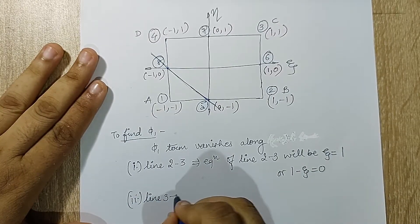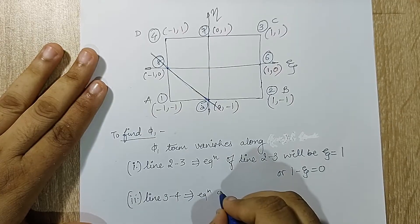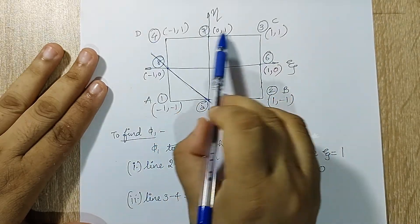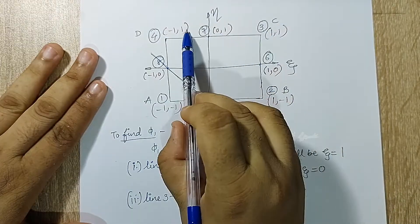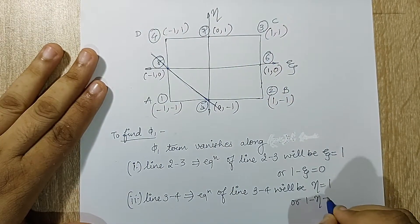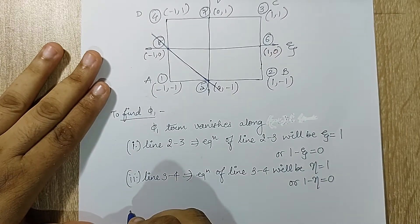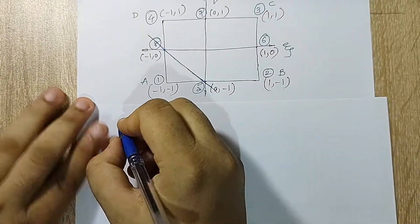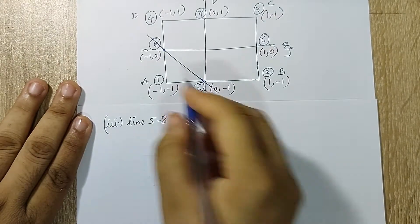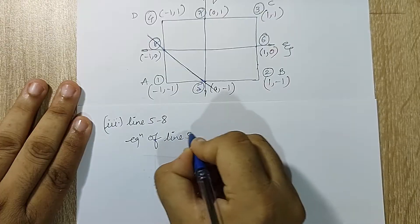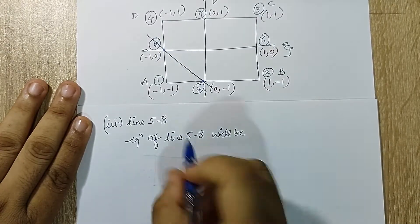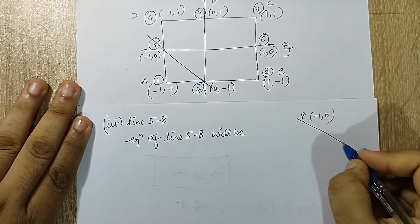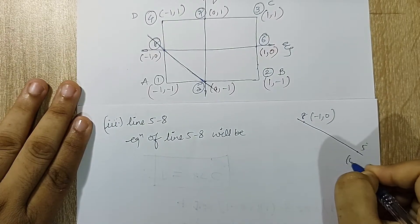Second, phi_1 vanishes along line 3-4. Looking at 3-4, eta = 1 everywhere, so the equation is eta = 1, or 1 minus eta = 0. Next, I will go for line 5-8 — we will see how to calculate the equation of this line. Node 8 is at (-1, 0) and node 5 is at (0, -1).